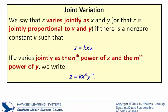We say that z varies jointly as x and y, or that z is jointly proportional to x and y, if there is a non-zero constant k such that z equals k times x times y. If z varies jointly as the nth power of x and the mth power of y, we write z equals k times x to the n times y to the m.